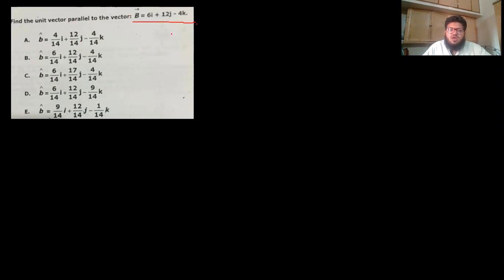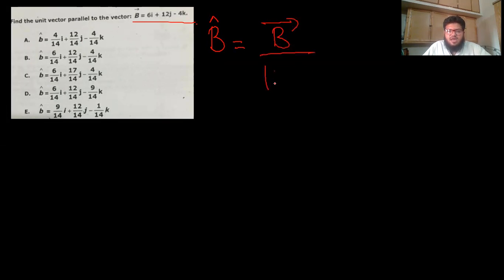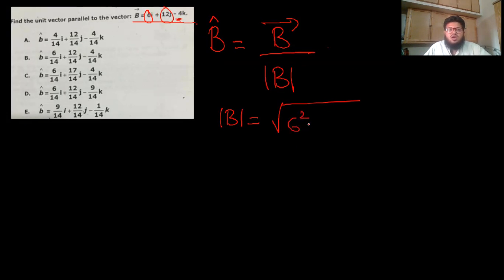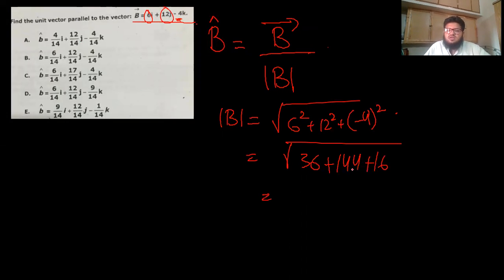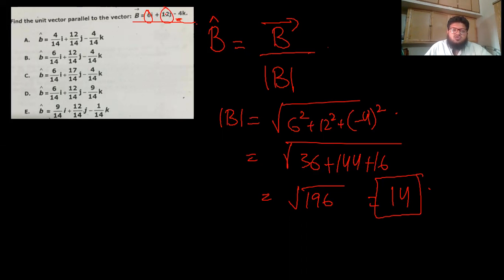Find the unit vector parallel to vector b = 6i + 12j − 4k. The unit vector formula is: vector divided by its magnitude. Magnitude = √(6² + 12² + (−4)²) = √(36 + 144 + 16) = √196 = 14. So the unit vector = (6i/14) + (12j/14) − (4k/14). Option B is the answer.